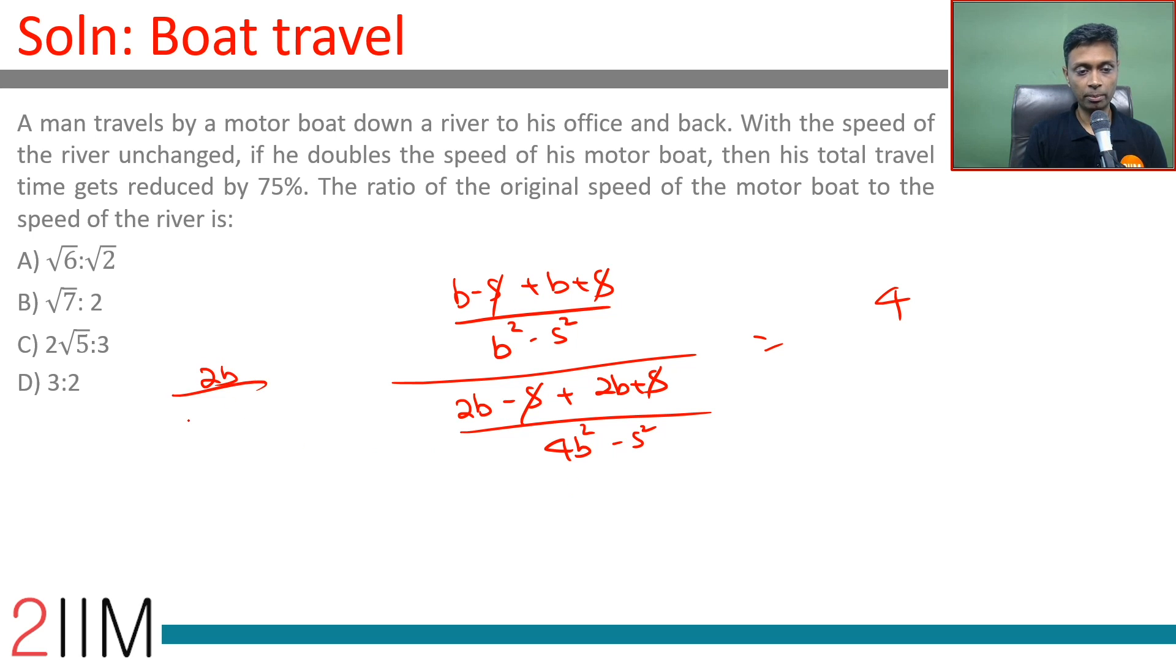So 2B by B square minus S square into 4B square minus S square by 4B equal to 4. The B gets knocked off. We have a 2 here. 4B square minus S square by B square minus S square is 8.